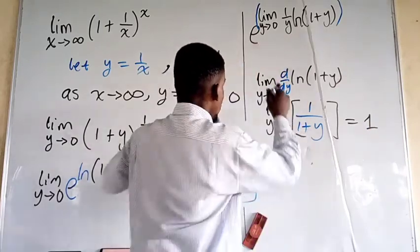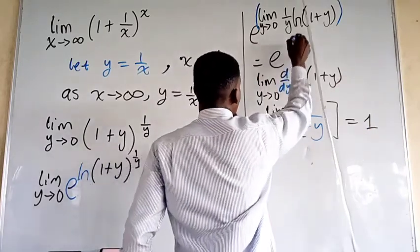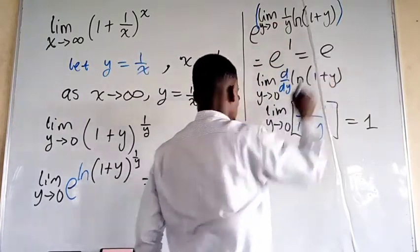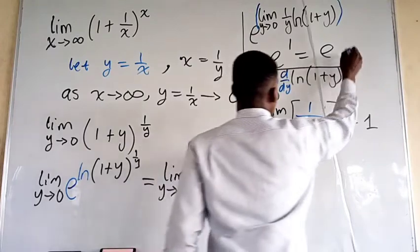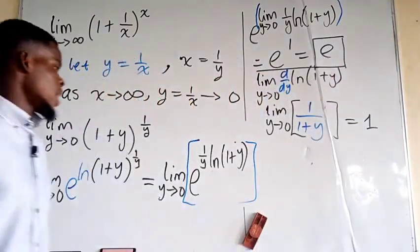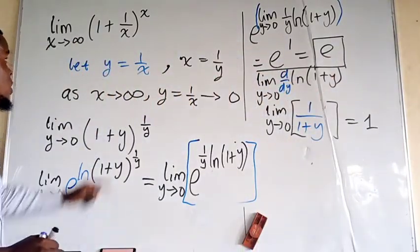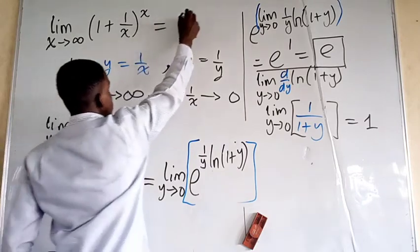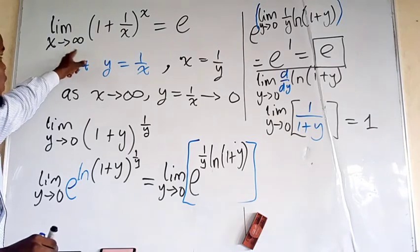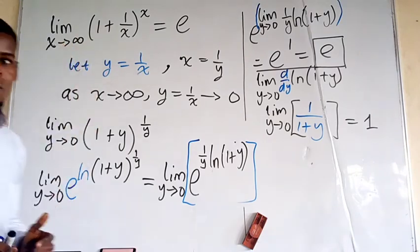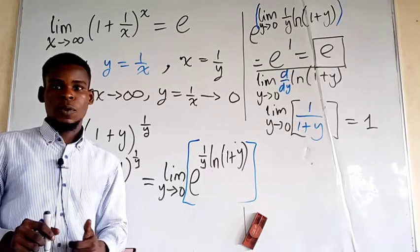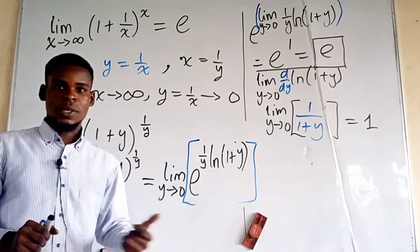So this is going to be e raised to the power 1, which is just equal to e. You see that this gives us the same result we had from the first method: the limit is e to the power 1, which is just e. It might seem like it's going to be 1, but it is not — it's e. Thanks for watching, and please subscribe to my channel.